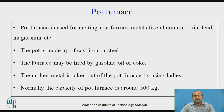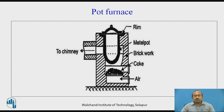Pot furnace: it is used for melting non-ferrous metals like aluminium, tin, lead, and magnesium. It is made up of cast iron or steel and fired with gasoline, oil, or coke. Molten metal is taken out from the pot furnace using ladles. Its normal capacity is 500 kg. The pot furnace diagram is self-explanatory with labeling of all parts.